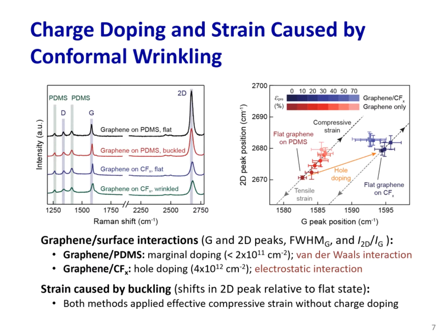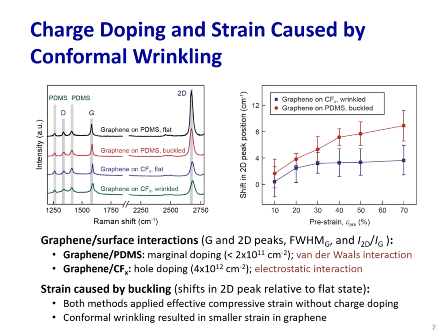We then compared the strain generated by textured graphene with and without the fluoropolymer layer. For both graphene wrinkles and delaminate buckles, wave numbers of G and 2D peaks closely followed a trend line with a slope of 2.2, shown as black dashed lines, which suggests that the relief of pre-strain applied effectively compressive strain to graphene without additional charge doping. Significantly, conformal graphene wrinkles showed smaller shifts in 2D peaks relative to the flat state than delaminate buckles for all tested pre-strains, indicating that the fluoropolymer layer reduced strain in graphene during texturing.